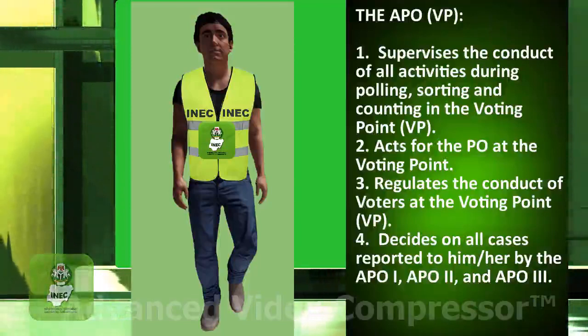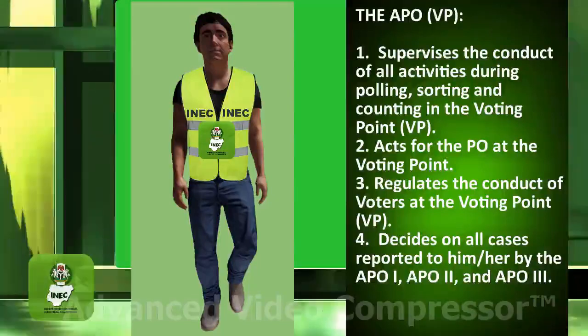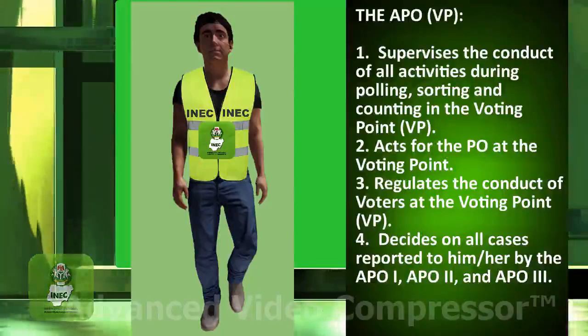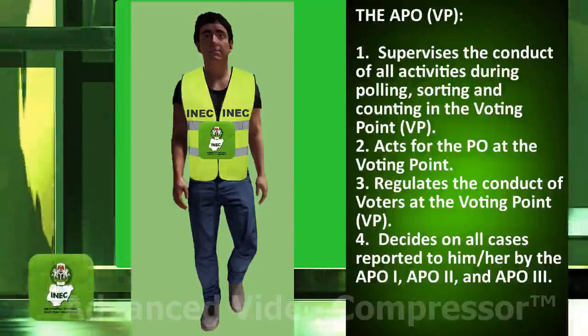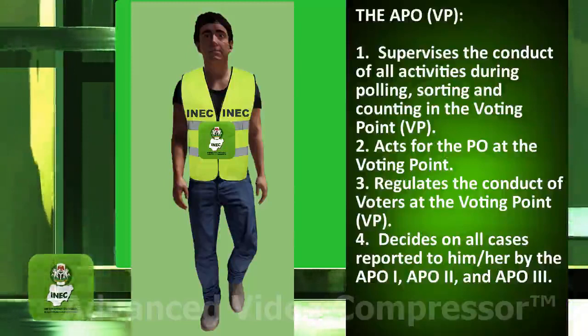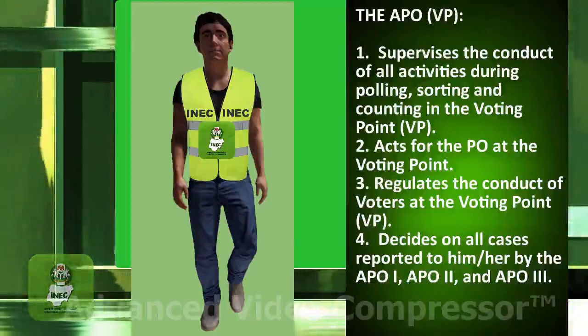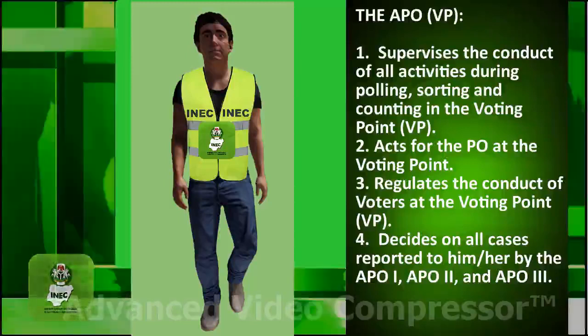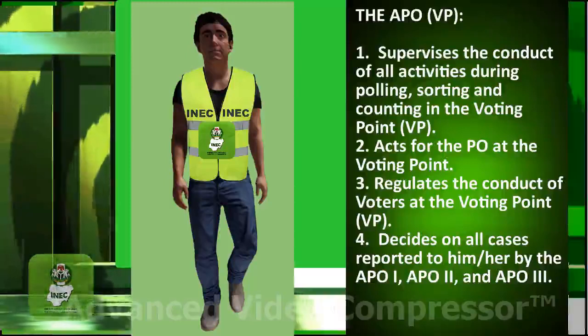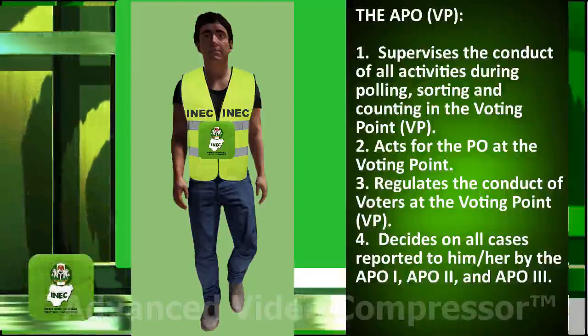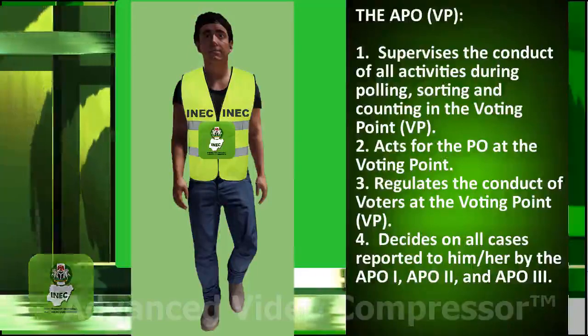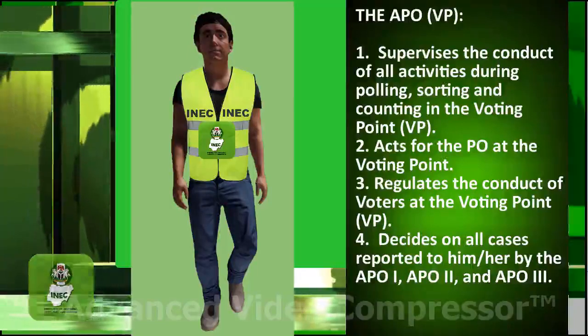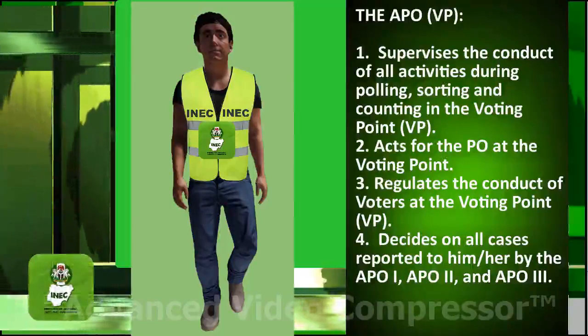The APO VP duties: 3. Regulates the conduct of voters at the voting point (VP). 4. Decides on all cases reported to him or her by APO1, APO2, and APO3.